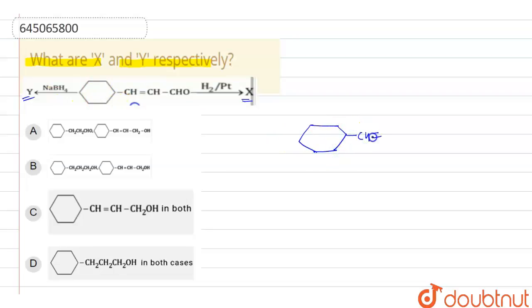So here we have CH double bond CH-CHO. Aldehyde group is there. So then firstly, it will react with NaBH4. NaBH4 will selectively reduce aldehyde and ketone only. So here in this group, we have aldehyde group is present. So it will reduce this and it will give this type of final product to us.